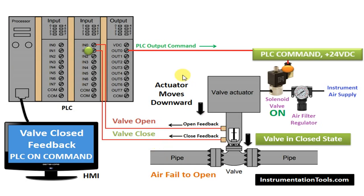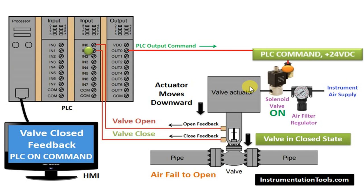For example, now the PLC will remove the command from the PLC. So, the power which is coming to the SOV will be removed. That means the SOV will be de-activated — it will go to off state. Once it goes to off state, there will be no air supply to the valve actuator. Already, some air will be there inside the actuator. That will also be vented outside via another port. So, the spring in the valve makes the actuator return again, to make the valve state change from closed state to open state.